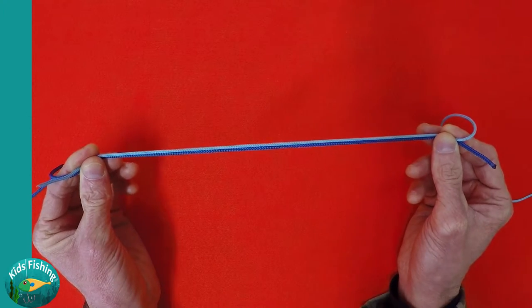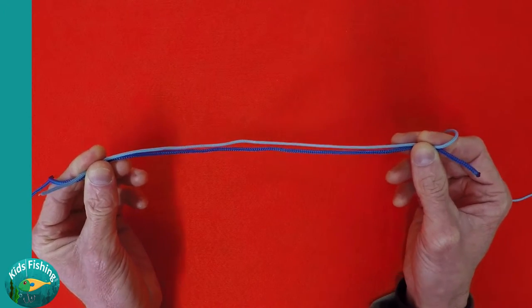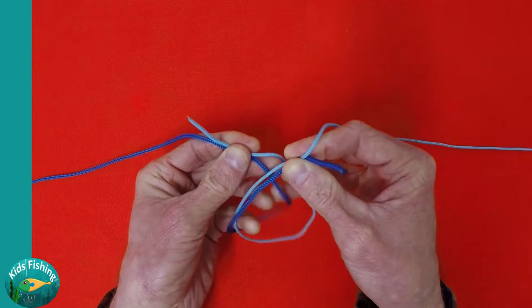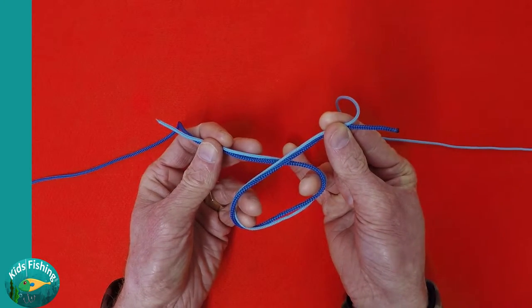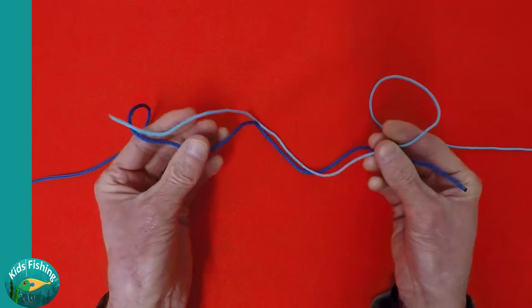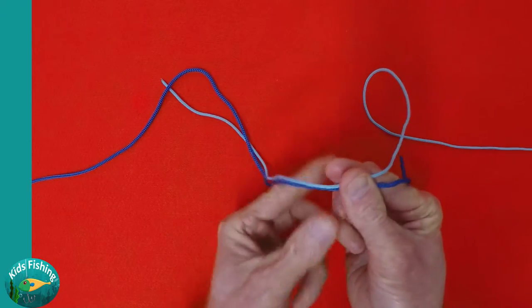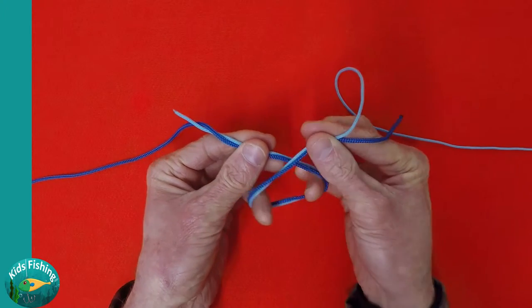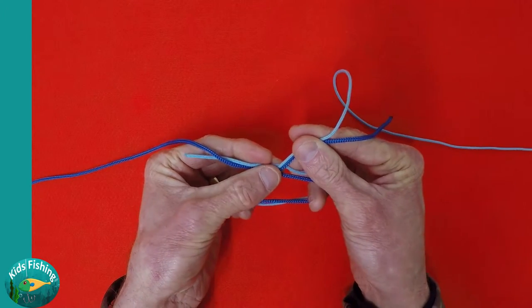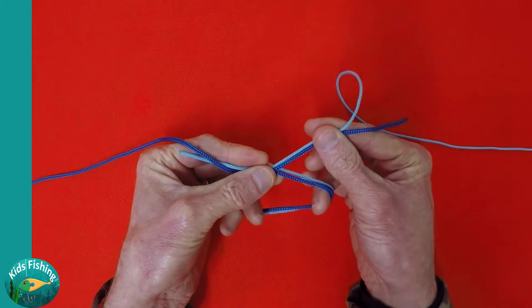The recommended way to teach children is to talk about creating a number six, so we've created a little loop and you can see it's number six. We'll do that again—here we go, number six. So we create a number six and we just hold the top of it with our forefinger and thumb just to control it.